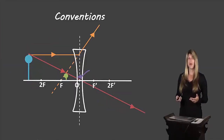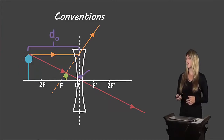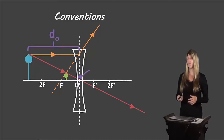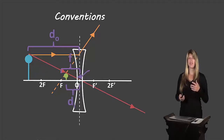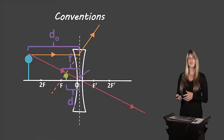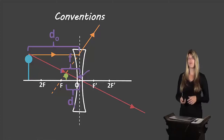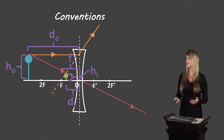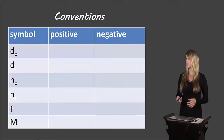We have those same descriptors when dealing with diverging lenses. So we have DO, the distance between the object and the optical centre. DI is the distance between the image and the optical centre. F is the distance between the focus and the optical centre — it stands for focal length. We also have HO, height of the object, and HI, height of the image.